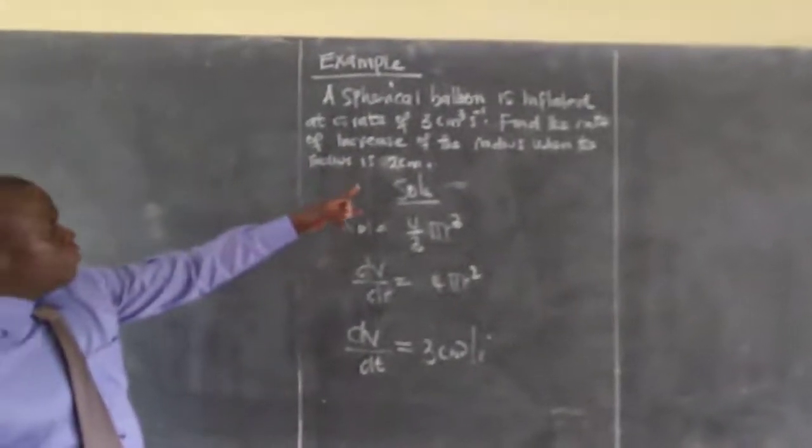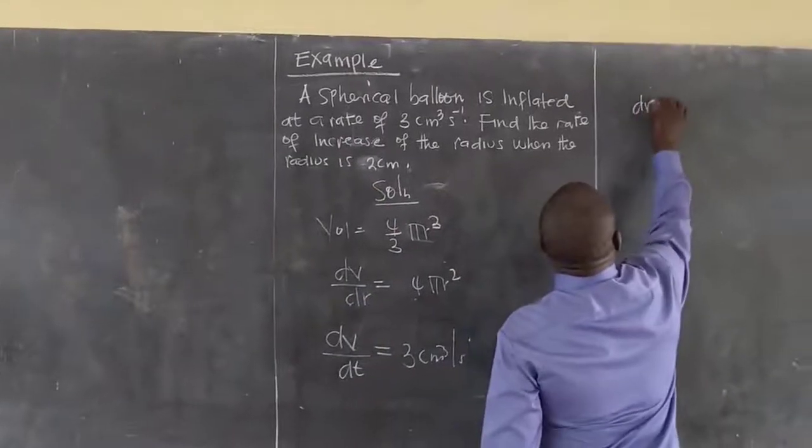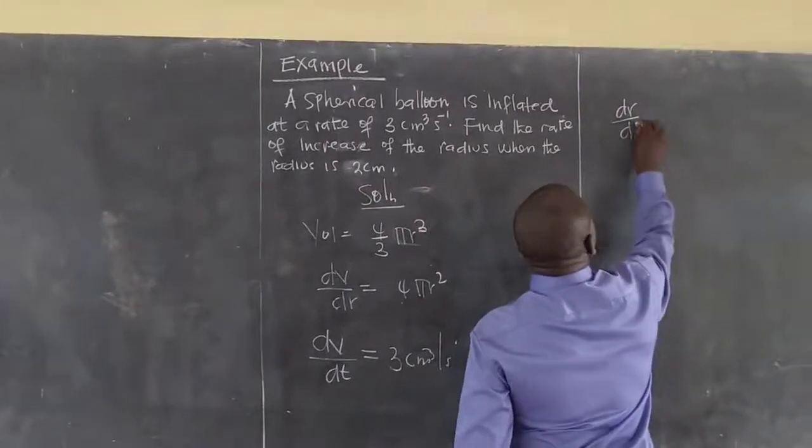What I am looking for, I am looking for the rate of change of radius, which is dr/dt.